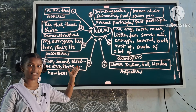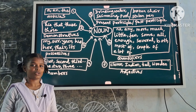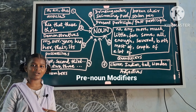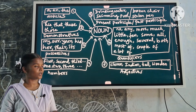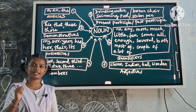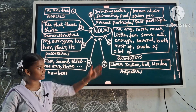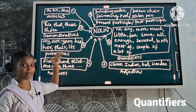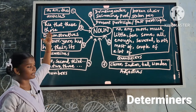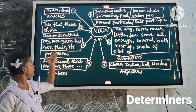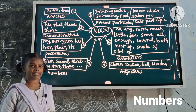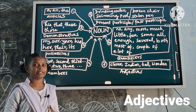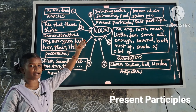These modifiers go before the noun, so they are called pre-noun modifiers. When there is more than one modifier, we follow an order. First come quantifiers, next come determiners such as articles, demonstratives, and possessives, then numbers, then adjectives, then present participles.